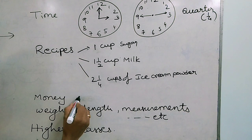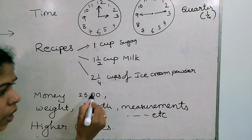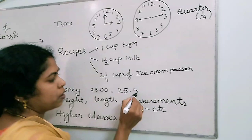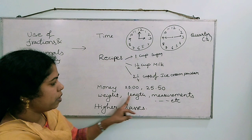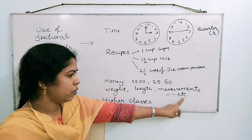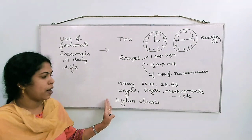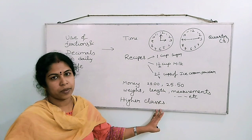Let us suppose 25 rupees - you can also represent it like this: 25 rupees 50 paise. How will you represent 25 rupees 50 paise? Like this - we can use decimals in money. And also weight, length, and measurements - all these concepts need the concept of decimals. Both fractions and decimals are useful in higher classes also; we must be very clear with fractions and decimals to learn concepts in higher classes.